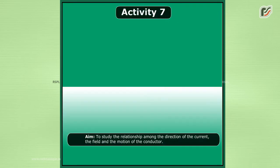Activity 7. Aim: to study the relationship among the direction of the current, the field, and the motion of the conductor.